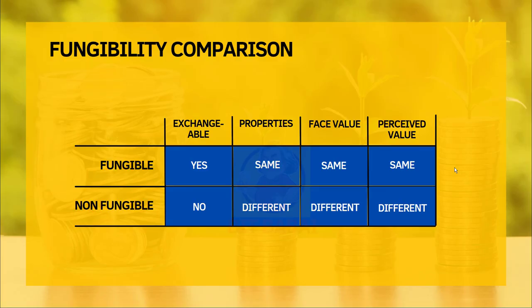Let's take the four dimensions we just discussed and see how they look for fungible and non-fungible items. A $100 note is exchangeable with same properties, same face and perceived value. On the other hand, non-fungible items are not exchangeable and they have different properties, face and perceived value. I want you to think of fungibility as a wide spectrum — things can be truly fungible or non-fungible, or both, based on context. Fungibility is not always a binary thing.